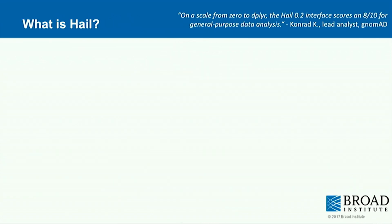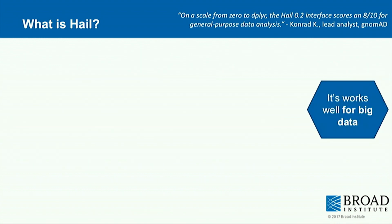So what is Hail? The lead analyst for gnomAD, Conrad Karczewski, rated the Hail 0.2 interface an 8 out of 10 for general purpose data analysis on a scale of 0 to dplyr — a tool in R for manipulating data tables. Knowing Conrad, that's actually a pretty high score.